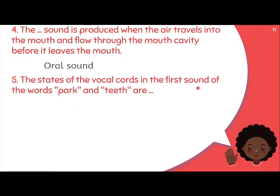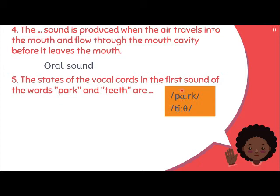Number five: 'The state of the vocal cords in the first sound of the word par and tit.' Some of you may still be confused about how to answer this. The question asks about the state of the vocal cords, so the answer will be either voice or voiceless. What we need to find is the first sound. If we look at the phonetic transcription, park and tit — the first sounds are /p/ and /t/, which are both voiceless. Voiceless means there is no vibration in the vocal cords.